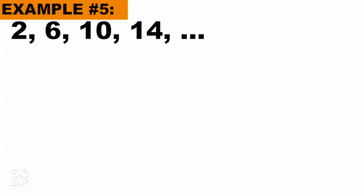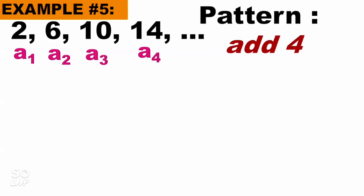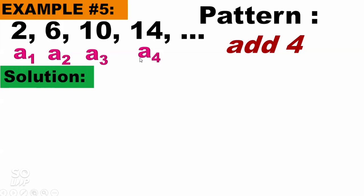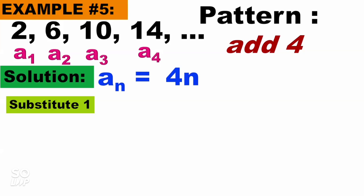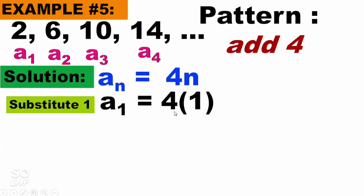Example number 5: 2, 6, 10, 14 — a sub 1, a sub 2, a sub 3, a sub 4. The pattern is we add 4: 2 plus 4 is 6, plus 4 is 10, plus 4 is 14. The solution: a sub n equals 4n. To find the first term, substitute 1: 4 times 1 is 4. But the first term is 2, so we need to subtract 2: 4 minus 2 equals 2.